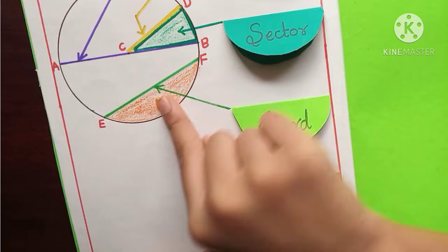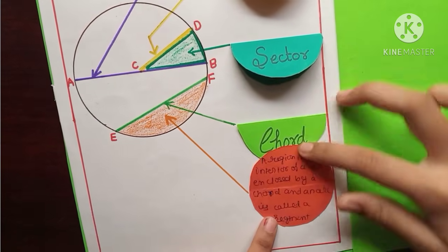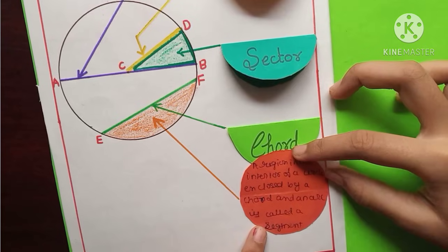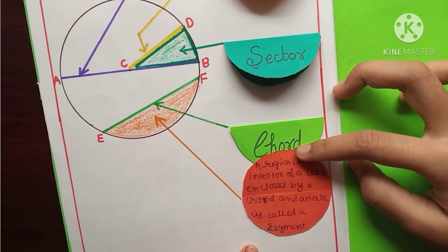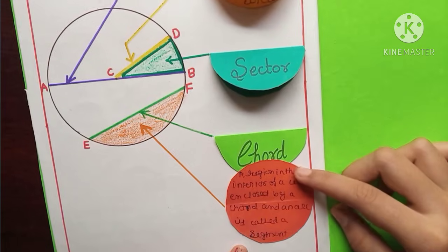Here is the segment. You can see it is orange color. This is a segment. Let's see the definition. A region in the interior of a circle enclosed by a chord and an arc is called a segment.